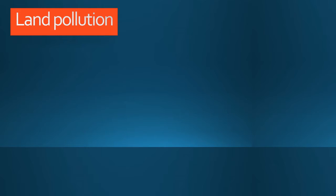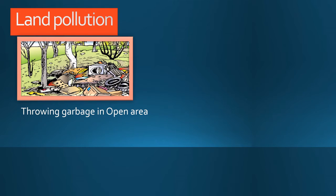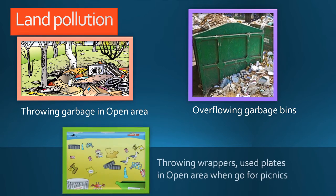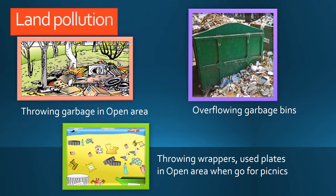Land pollution. Now let us see why land is getting polluted. Some people are not using dustbins and are throwing garbage in open areas. Some garbage bins are overflowing because garbage is not collected daily by the cleaning staff. Some people go for a picnic and throw wrappers, plastic bottles and plastic plates in open areas. All of these are creating land pollution.